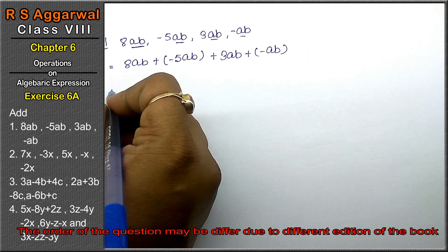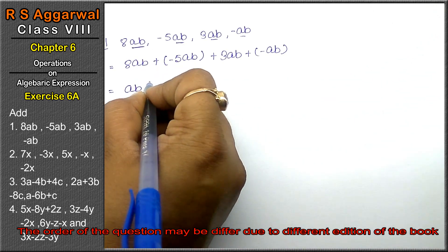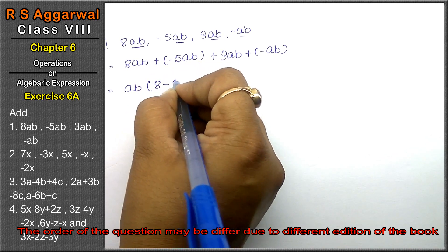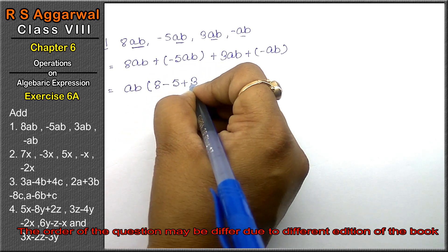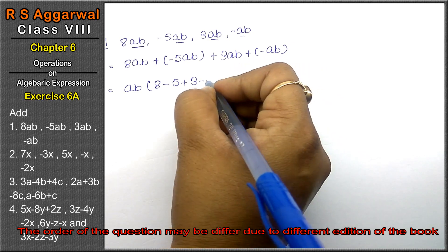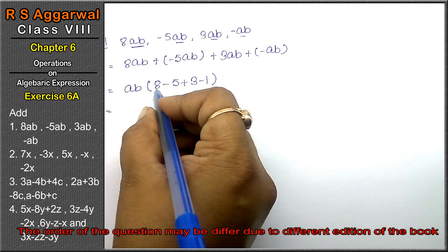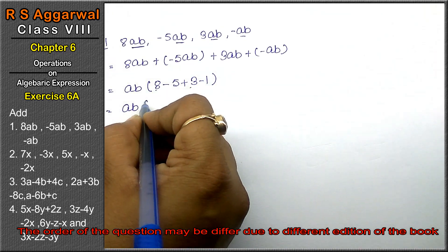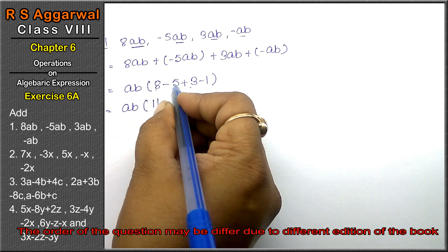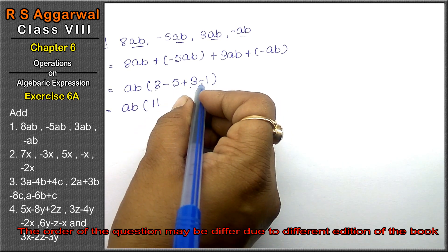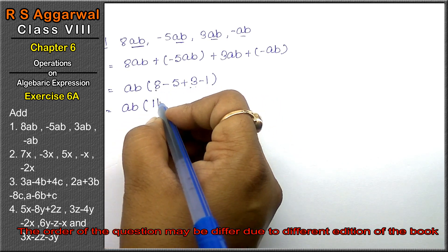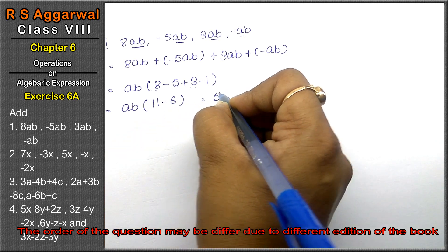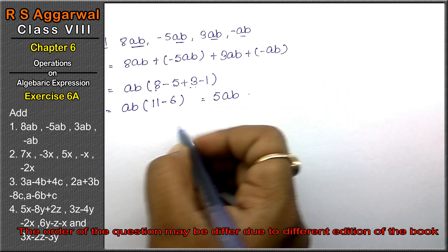Now the variable ab is common, so we take ab outside. We get: (8 + (-5) + 3 + (-1))ab. The positive numbers are 8 and 3, giving 8 plus 3 equals 11. The negative numbers are minus 5 and minus 1, giving minus 6. So 11 minus 6 equals 5. The answer is 5ab.